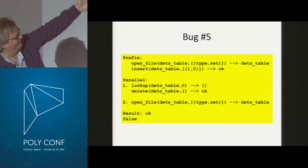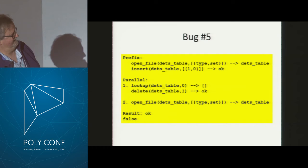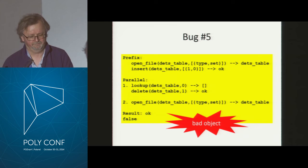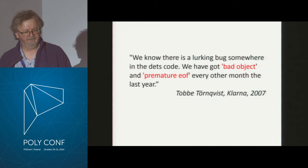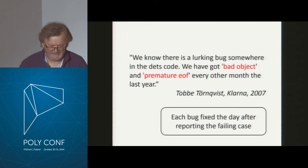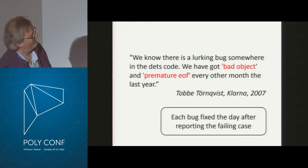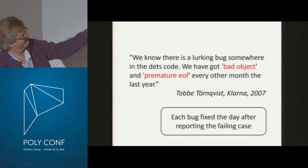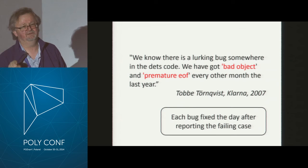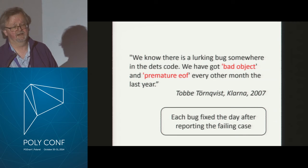Here we are: we open a file, insert 1,0 into it, and then do two things in parallel. One process reopens the file. The other looks up something that's not there and then deletes the thing that is. When I checked for corruption, I got 'bad object' — the exact message from the mailing list: 'bad object and premature end of file every other month the last year.' The symptoms are the same. I sent that off to the maintainer the next day, he sent me the fixed version. There's now a lot of evidence: this fixed version has been in production at Klarna for more than a year, and since it was deployed there's been just one bad object exception — which happened when reading a file last written before the new code went into effect.